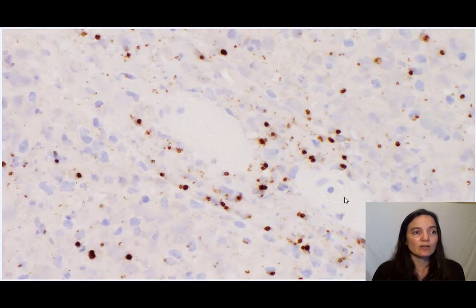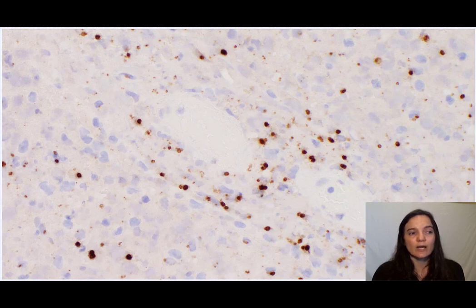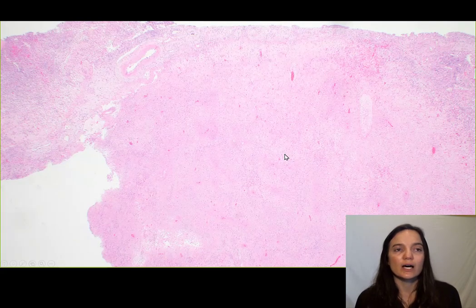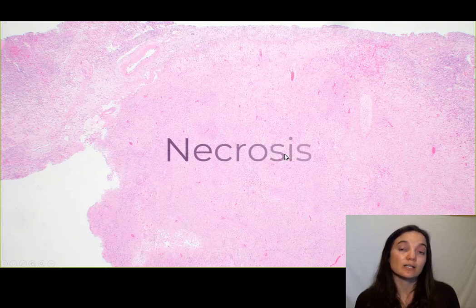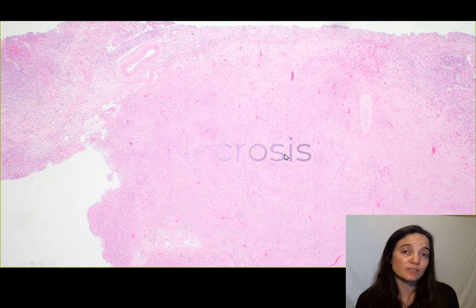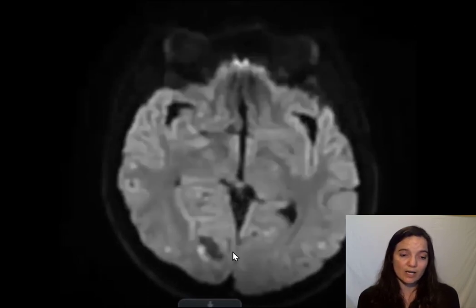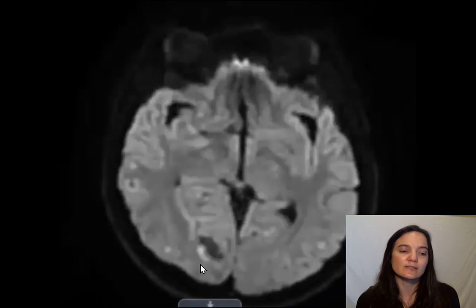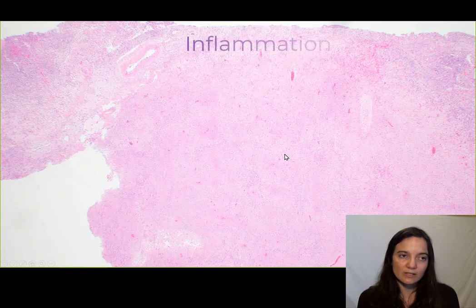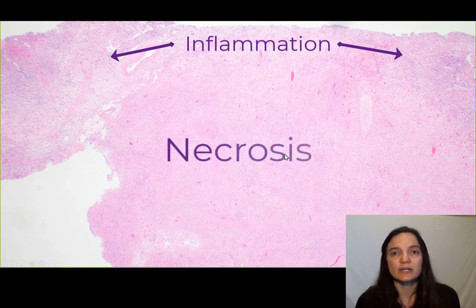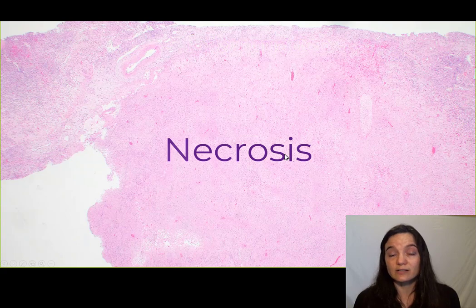We can see the blood vessels in negative relief here, and all of these organisms lighting up on immunohistochemistry in and around the blood vessels are responsible for the large regions of necrosis we see on histology. We can also see evidence of that necrosis on imaging, where centrally the DWI signal was not really accentuated, but along the rim there is enhancement and increased DWI signal. That rim pattern is associated with inflammation from organisms surrounding the area of central necrosis, which is caused by the vasculitis and endarteritis obliterans.